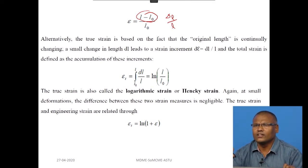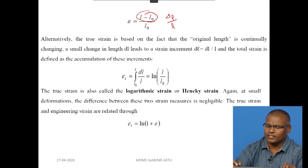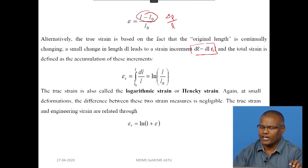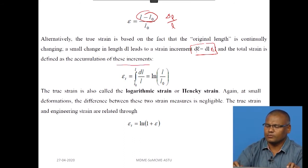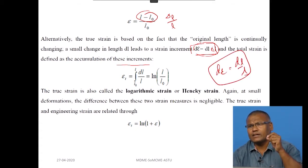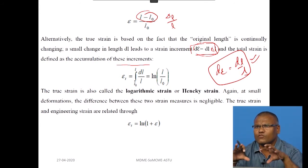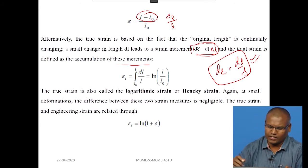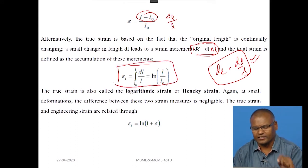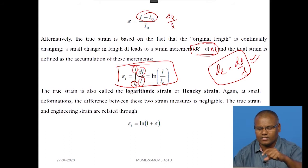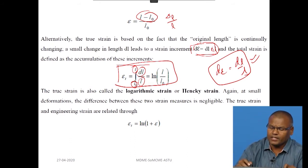To know the instantaneous change, we consider the strain increment: d epsilon equals dL divided by L. The total strain is defined as the accumulation of these incremental strains. For each and every point, dL/L tells you the strain at that point. The total strain for the deformation is calculated as the integral from original length L0 to final length L of dL/L, which equals ln(L/L0).